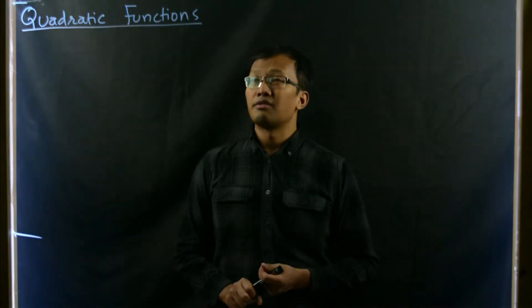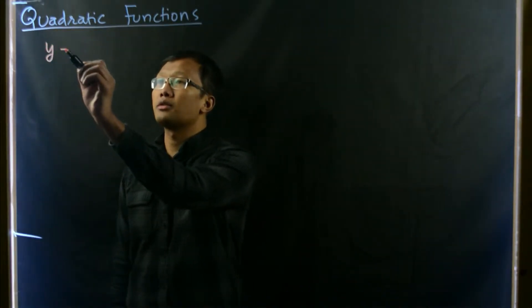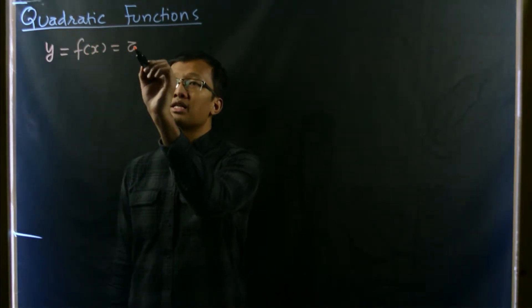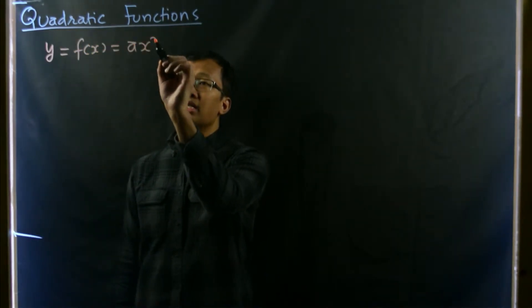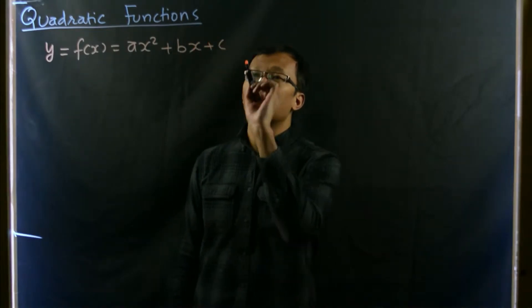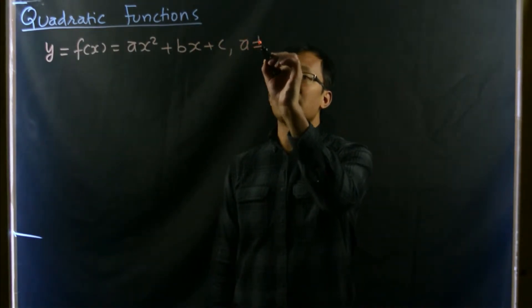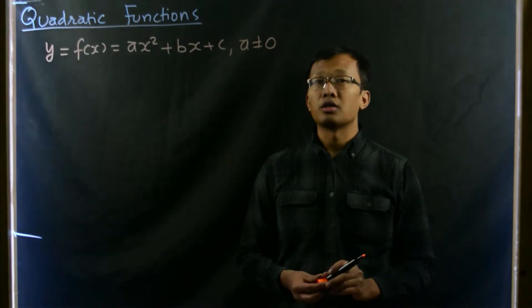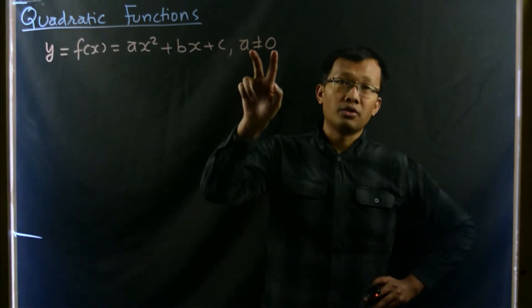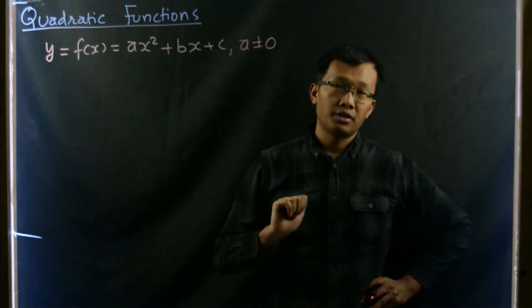Let's talk about quadratic functions. A function of type y equals f of x equals ax squared plus bx plus c, where a is non-zero, is called a quadratic function. A should not be equal to zero. If a equals zero, then this becomes a linear function.